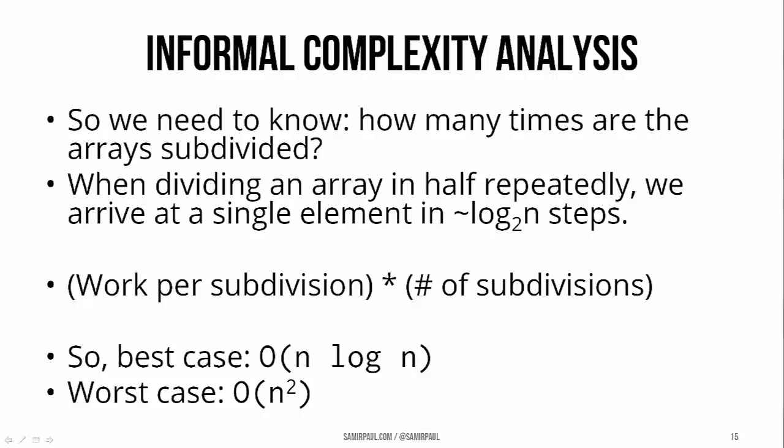Now, that log n, that's a best case scenario. The worst case would be if our pivot ended up being really badly chosen and it took us way more than log n divisions to get down to single element arrays. And in that case, we'd be doing n phases of work and n subdivisions, which would mean our worst case scenario here is n squared.